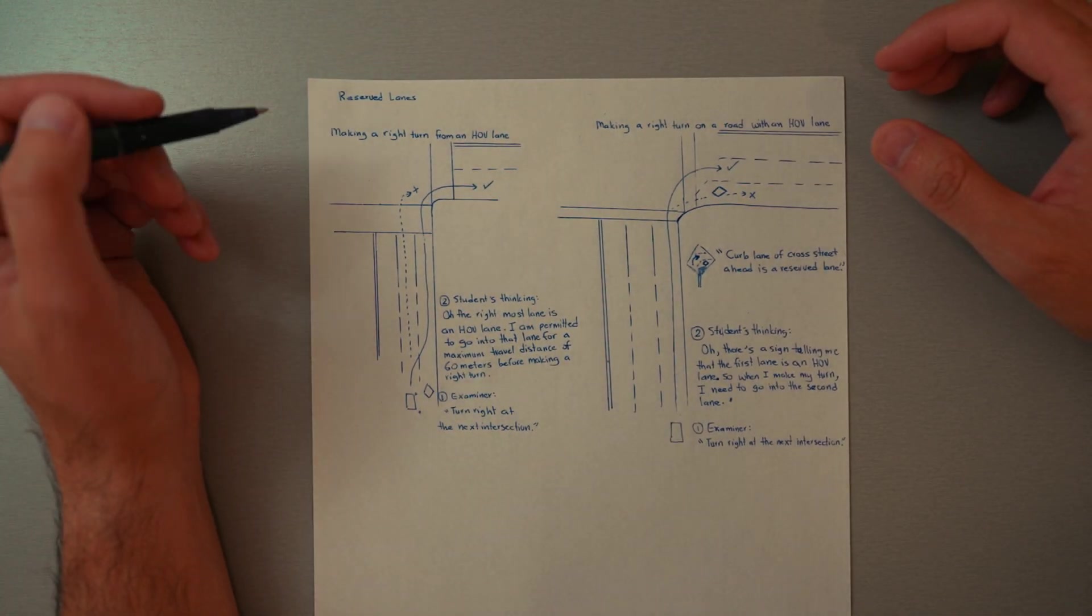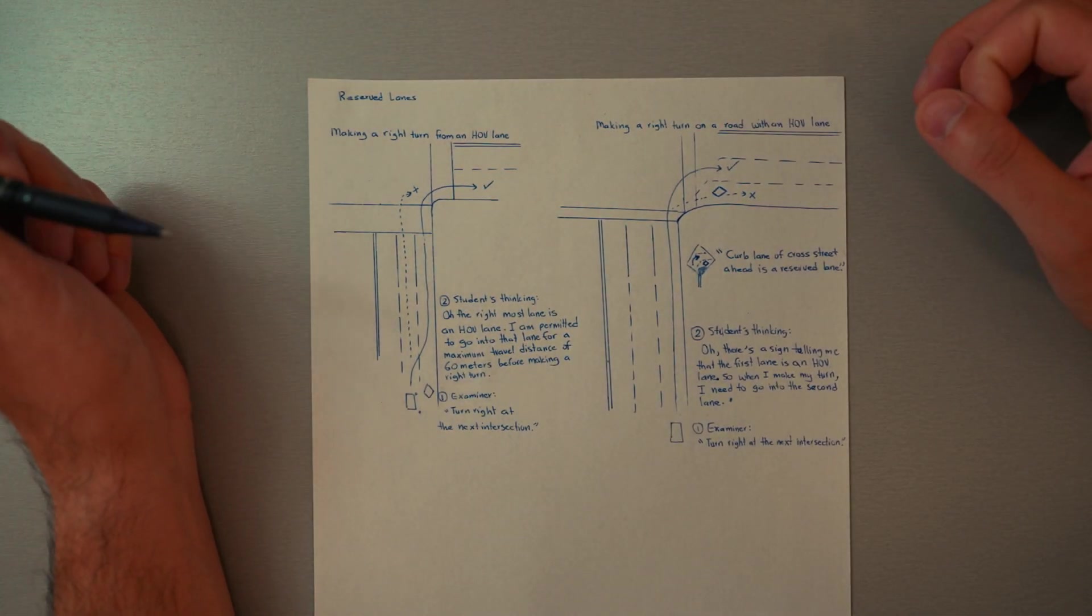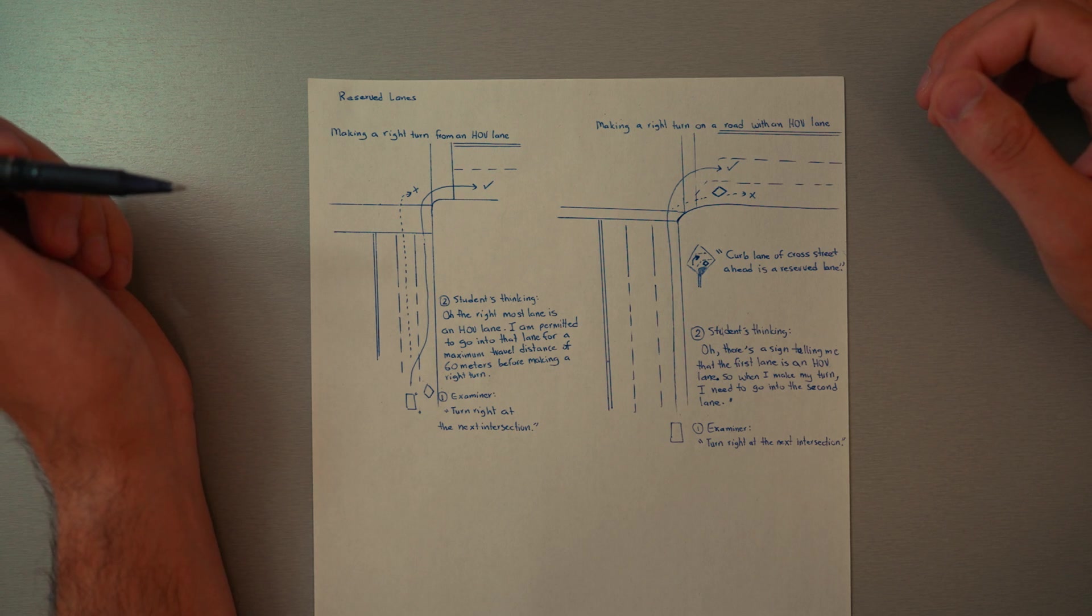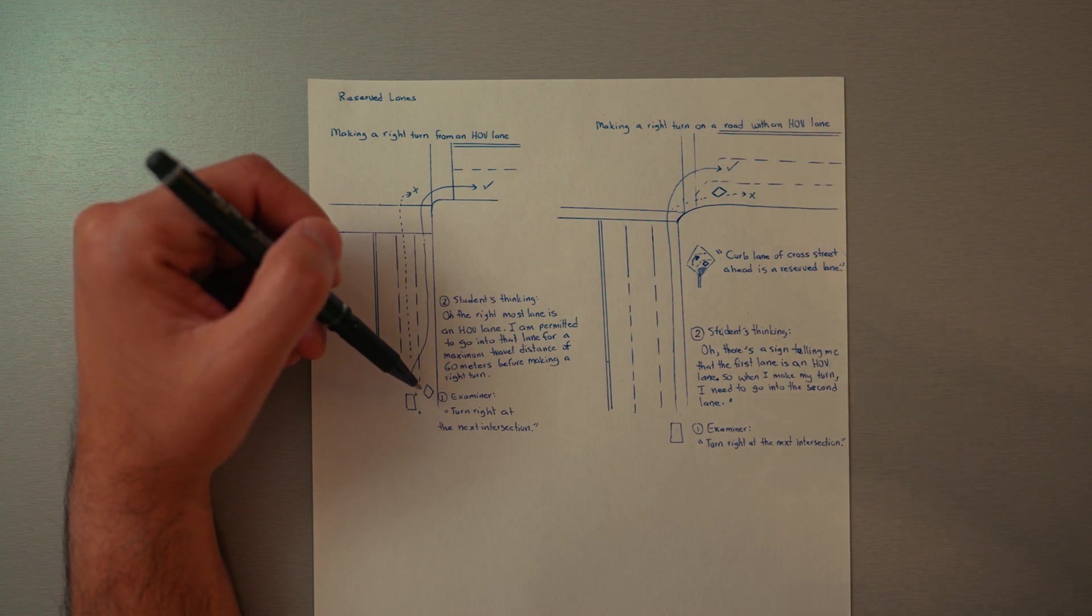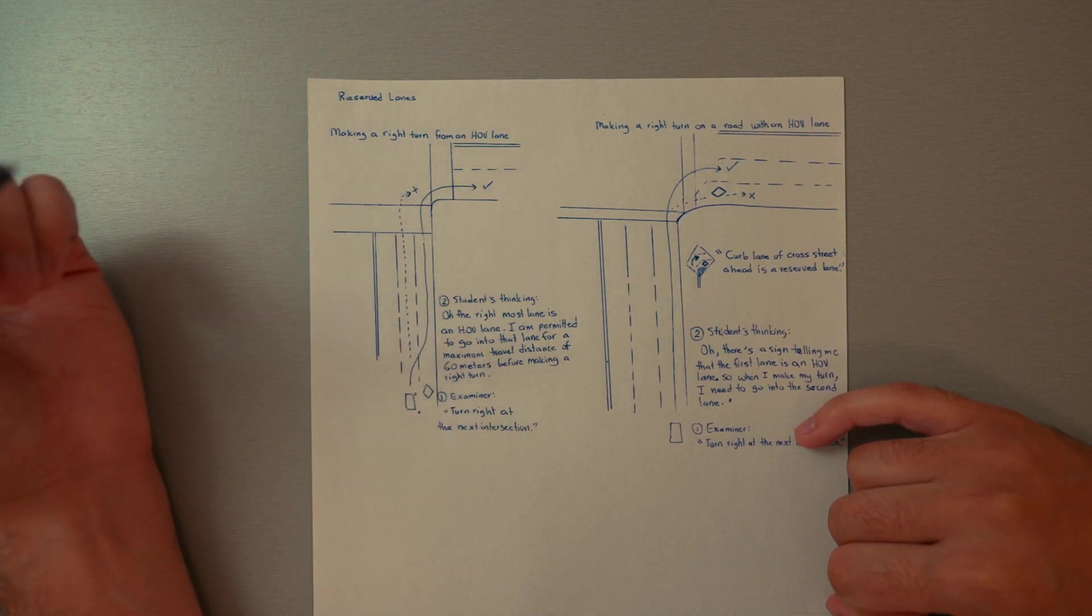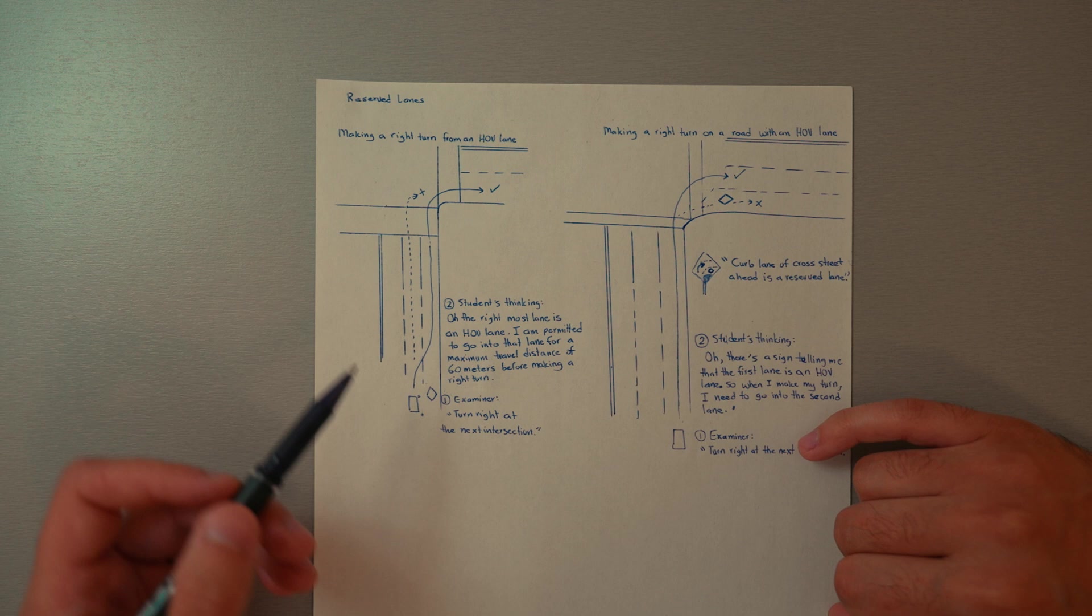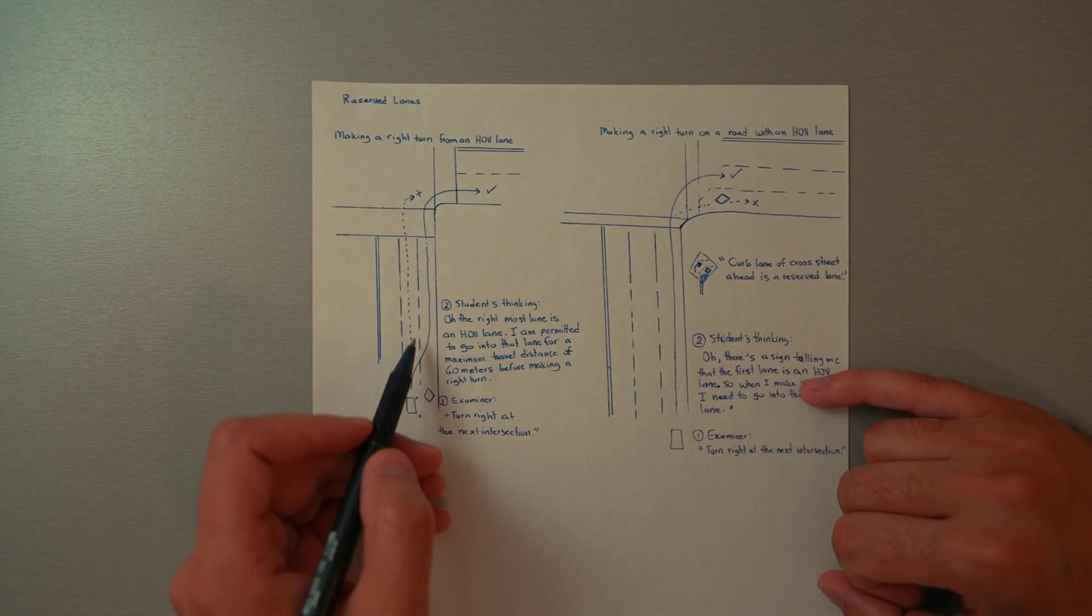All right, let's talk about reserved lanes. Making a right turn from a road that has an HOV lane onto a road that doesn't have an HOV lane. So when you're coming up to make a right turn, we have to turn from the closest edge of the road.